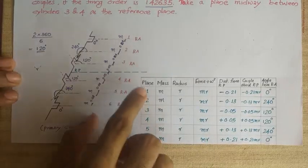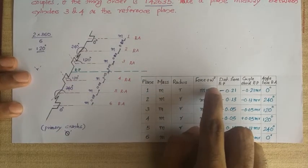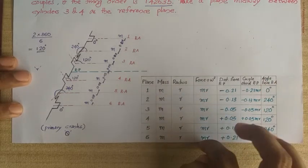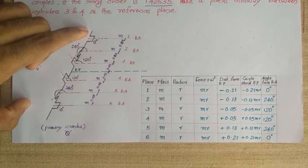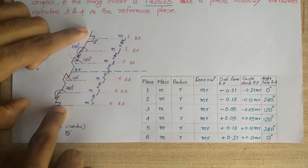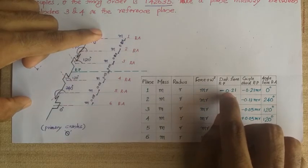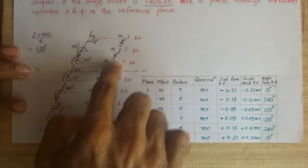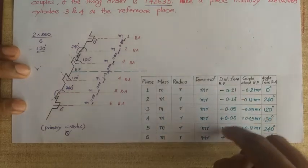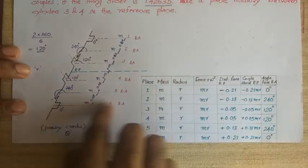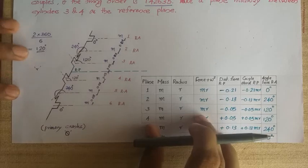We construct a table with planes 1 through 6. Masses and radii are the same, so we calculate the centrifugal force term mr and mark only that for the polygon. Distances from the reference plane are filled in, with cylinders on one side having positive values and the other side negative. For example, plane 1 is 0.21 m to the left, giving minus 0.21. The couple column is calculated by multiplying the mr column by the distance column, and the angle with respect to the horizontal reference axis is filled in for all six cylinders.